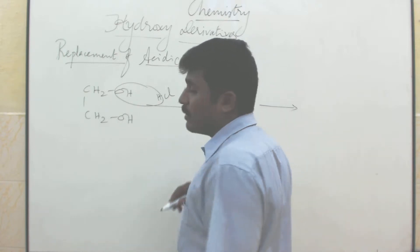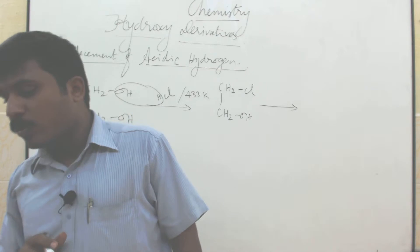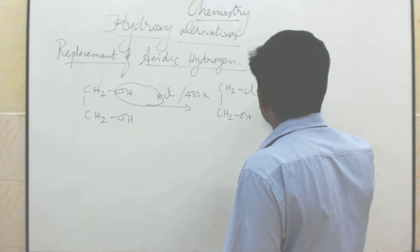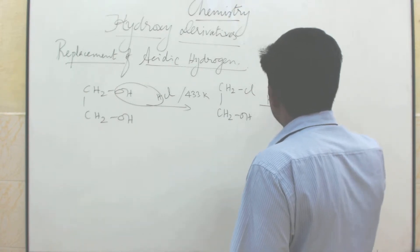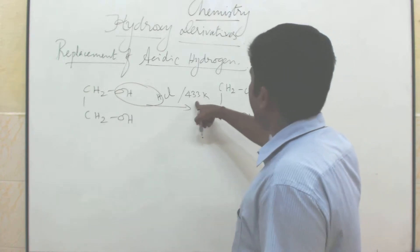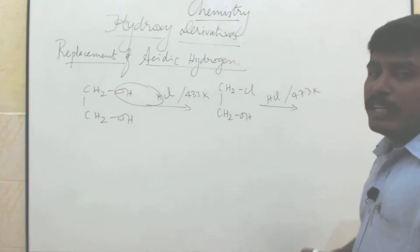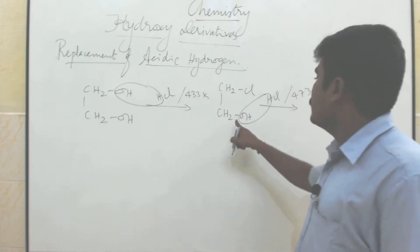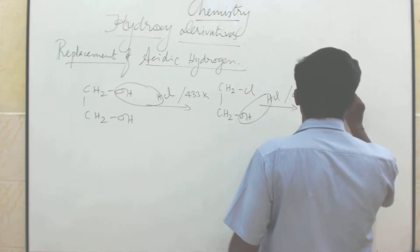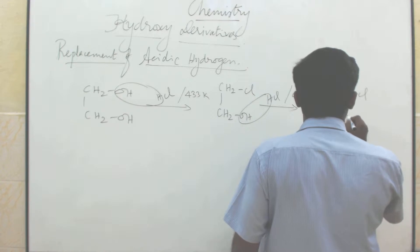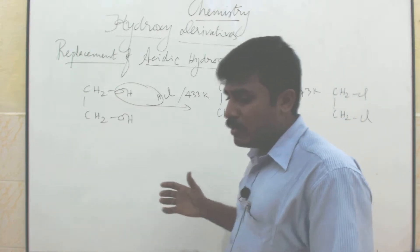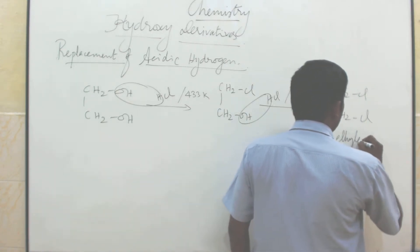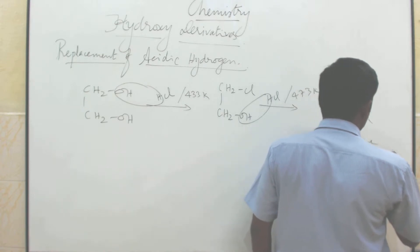Because one more acidic hydrogen is there, we add HCl at 473 Kelvin — increasing from 433 to 473 Kelvin. Again, this water molecule is removed, and Cl is added in that place — namely CH2Cl bond CH2Cl. The name of the compound is ethylene dichloride.